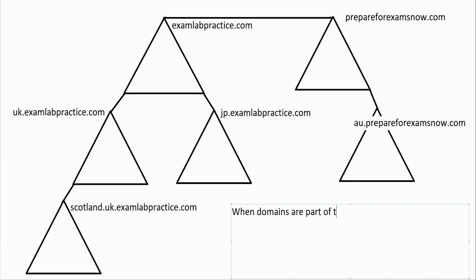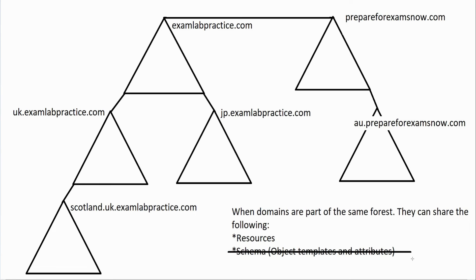The schema is part of the active directory database that makes up all of the different objects, all the different attributes. So when domains are part of the same forest, they can share the following: they can share resources, so that's files and folders, they can access printers, things like that. And then they also share the same schema. These are the object templates and attributes. I'm not getting too deep into the schema right now, but basically this involves the actual database itself. Now, when two different companies merge and they've already got active directory, like if prepareforexamsnow.com was another company and they already had their forest set up and we merged, they would not be sharing the same schema. We could set up a forest trust between the two and they could share resources, but they would not share the same schema. That means that if you created a special type of object in one forest, it's not going to replicate over to the other forest.